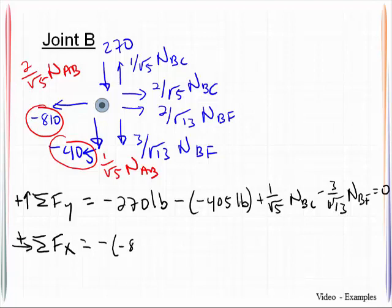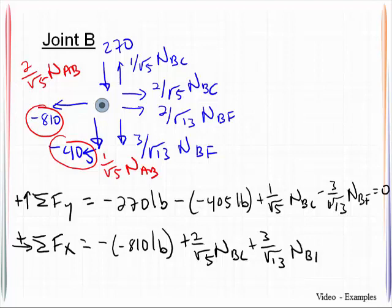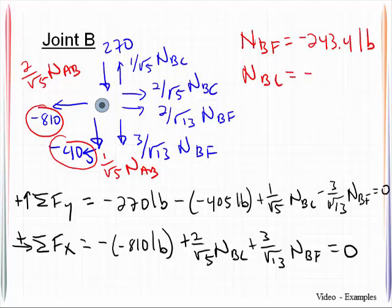So we're going to have to move on summing forces in the x direction. That will be a negative negative 810 pounds plus 2 over the square root of 5 NBC plus 3 over the square root of 13 NBF, and this is equal to 0. So what you have here is two equations and two unknowns. You have to do a simultaneous solution. And if you do that, you'll get NBF equals negative 243.4 pounds and NBC equals negative 754.7 pounds.